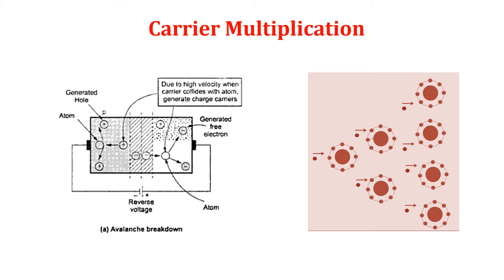This effect is called avalanche effect, and the mechanism of destroying the junction is called reverse breakdown of a p-n junction. The voltage at which the breakdown of a p-n junction occurs is called reverse breakdown voltage. A series resistance must be used to avoid the breakdown condition, in order to limit the reverse current.